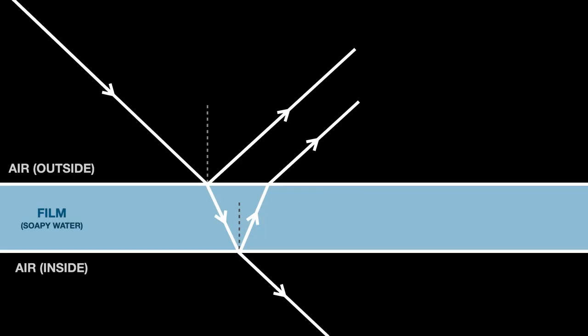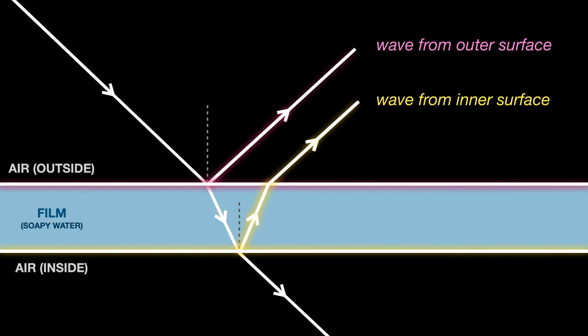These reflected waves then interact with each other resulting in what is known as interference. Interference occurs when two or more waves combine to form a resultant wave. In this case the two waves that interact are the ones reflected off of the outer and inner surfaces of the bubble wall.